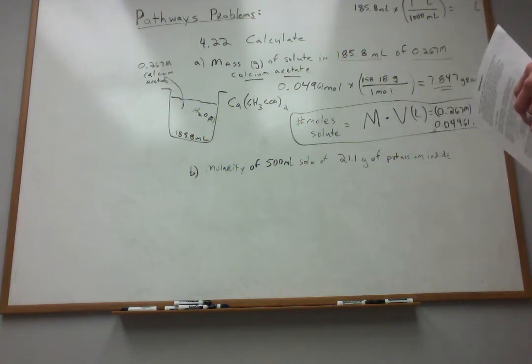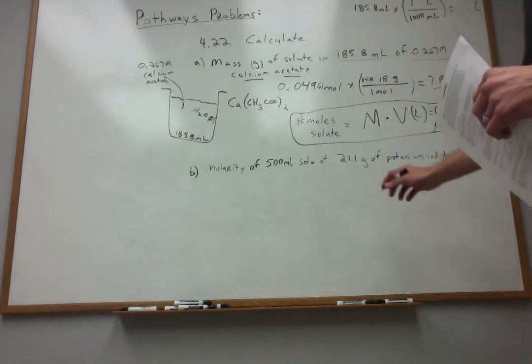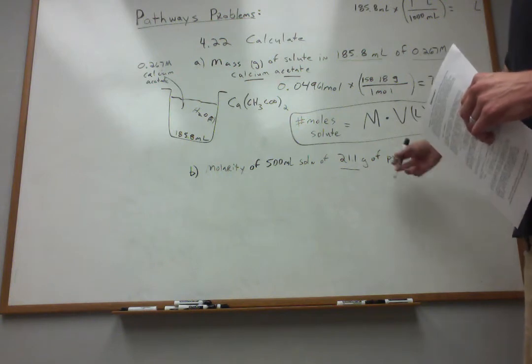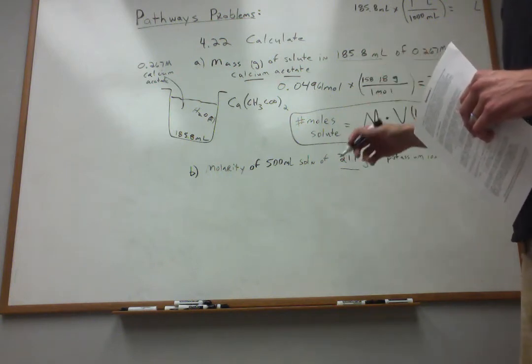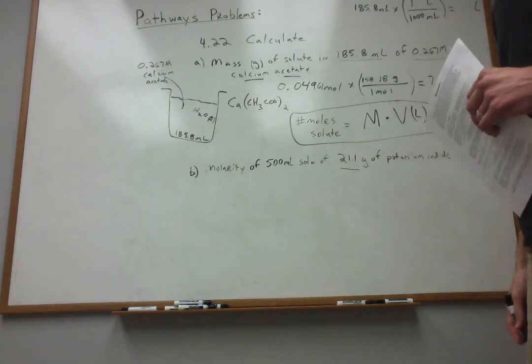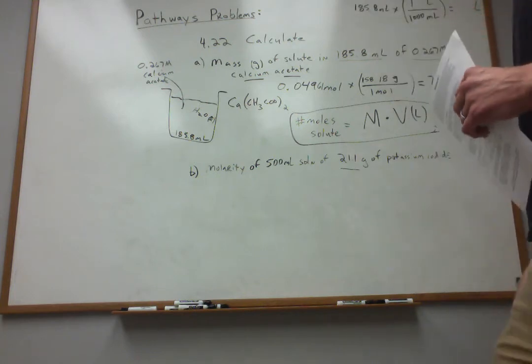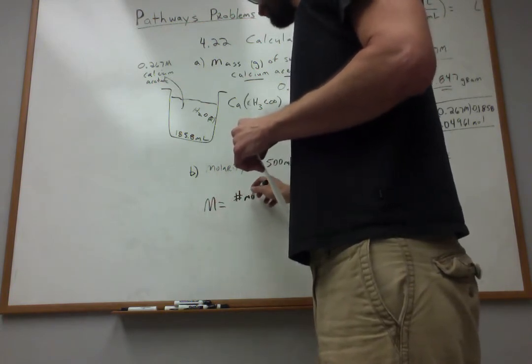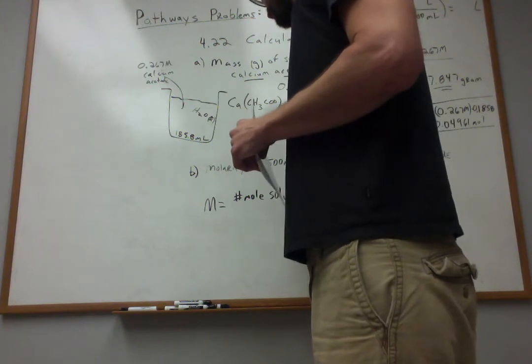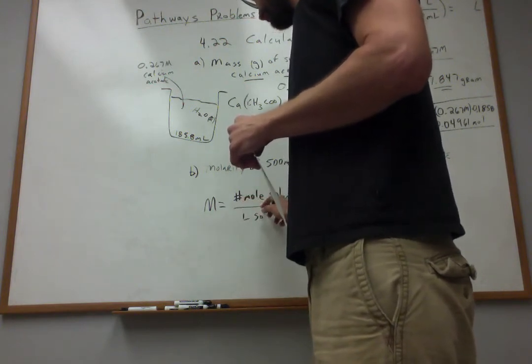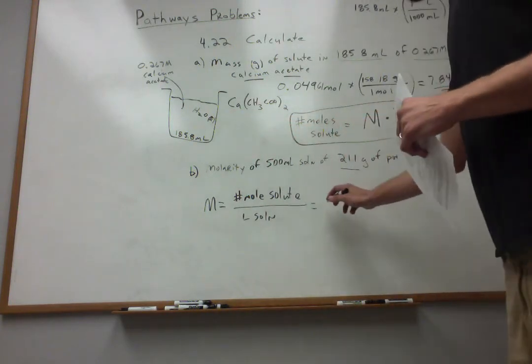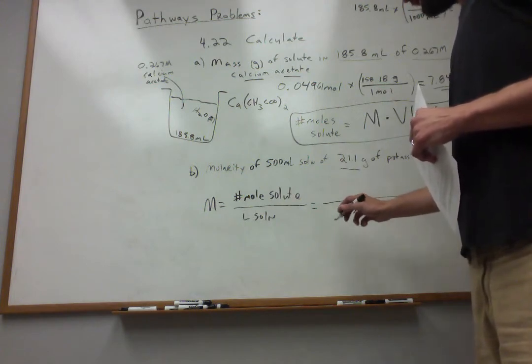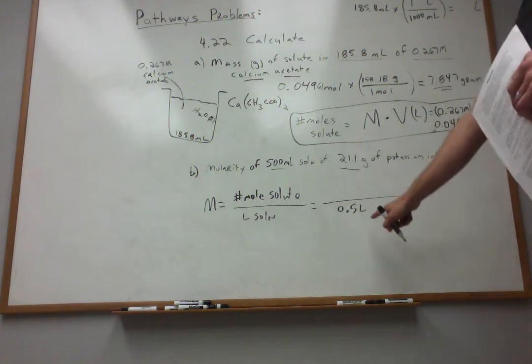Let's move on to part B. Molarity of a 500 milliliter solution that contains 21.1 grams of potassium iodide. So this is our solute, the potassium iodide. We're going to throw that into water and dilute until the final volume is 500 milliliters or right at a half a liter. We want to know what is the result in molarity. On the previous problem, we discussed that molarity is the number of moles of solute divided by the liters, the solution of the volume of the solution in liters.